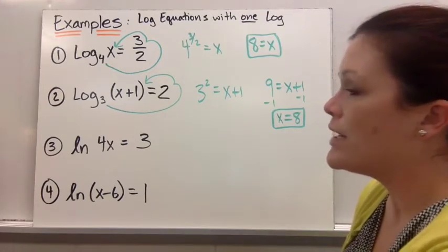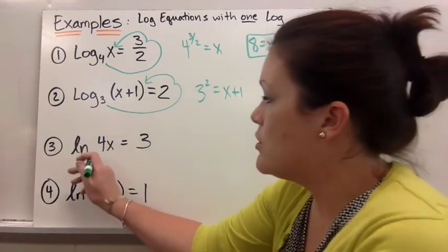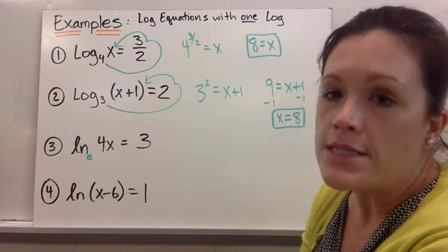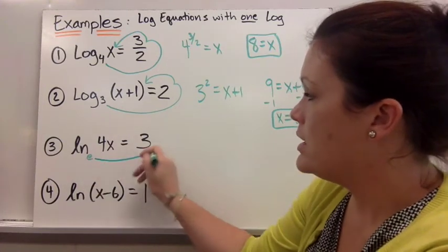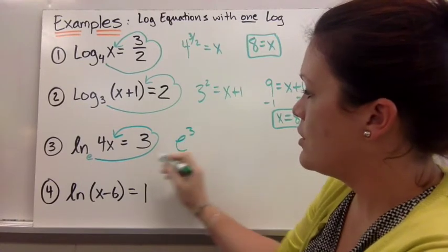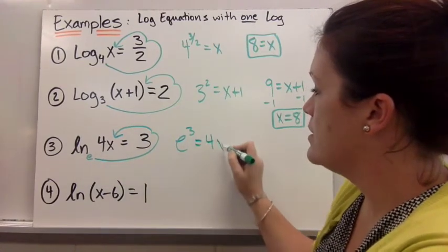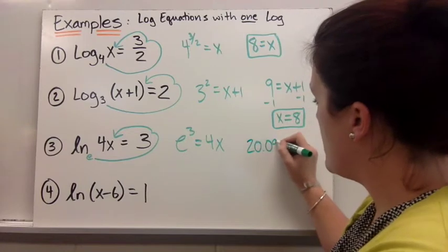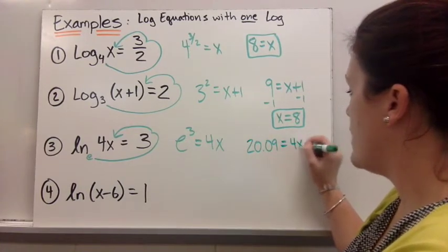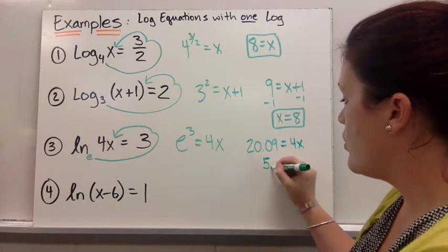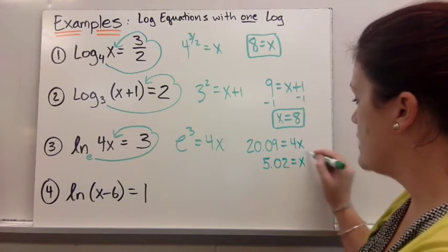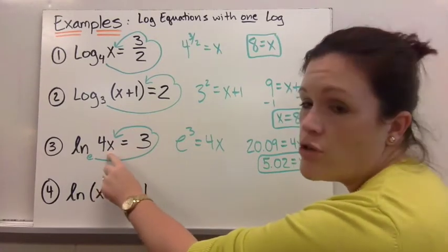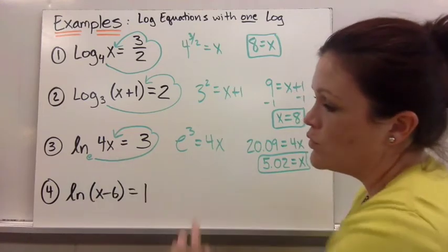For number 3, you have the natural log of 4x equals 3. Remember that natural log has an understood base of e. e is the anti-natural log and it's the button in your calculator that's second and then natural log. So you do e to the third power equals 4x. e to the third power is approximately 20.09, so 20.09 equals 4x. Dividing by 4, you get x approximately equals 5.02. Checking the answer, it's positive and times 4 would still be positive, so it's fine.